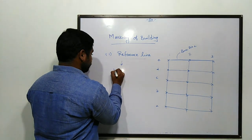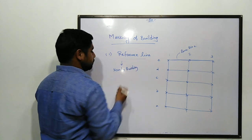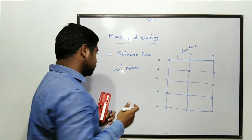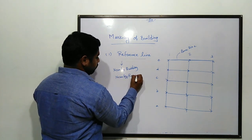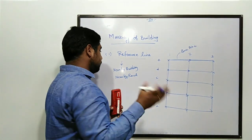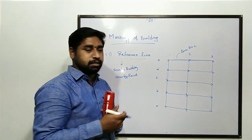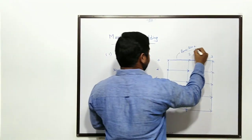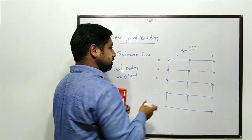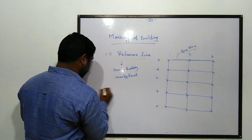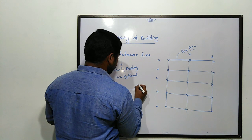The reference line can be taken from a nearby building. Using that nearby building as the reference line, we can then plot the base line on the ground. First of all, we can plot this base line.